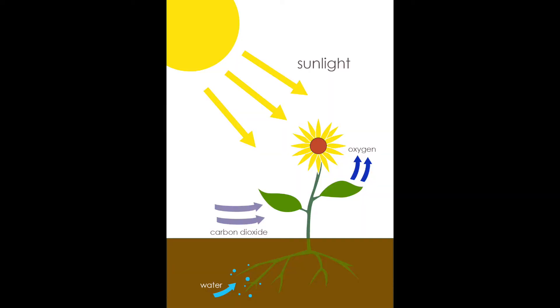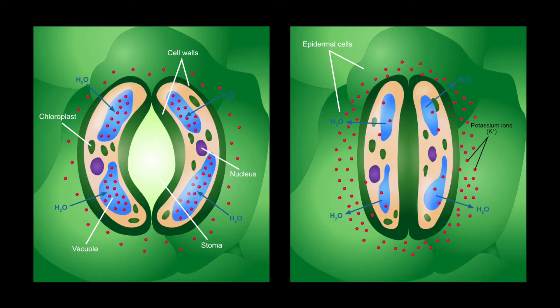Photosynthesis is the food-making process in plants and it occurs in the leaves of green plants, making leaves the food factories of plants. Under a microscope, you can find millions of minute pores in leaves guarded by cells known as guard cells — these pores are called stomata. Through stomata, the exchange of gases takes place: carbon dioxide is taken in and oxygen is given out.